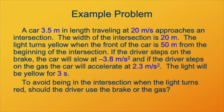The light turns yellow when the front of the car is 50 meters from the beginning of the intersection. If the driver steps on the brake, the car slows down at minus 3.8 meters per second squared. And if the driver steps on the gas, the car accelerates at 2.3 meters per second squared. The light will be yellow for three seconds. The question we're trying to settle is: should the driver use the brake or the gas?